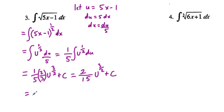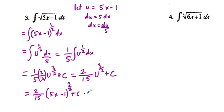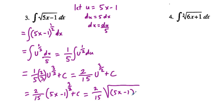Simplifying: the numerator 1 times 2 is 2, and the denominator 3 times 5 is 15, so we have two-fifteenths times u to the three-halves plus C. Substituting back, we have two-fifteenths times (5x minus 1) to the three-halves plus C. We can further rewrite in radical form as two-fifteenths times the cube of the square root of (5x minus 1), plus C.